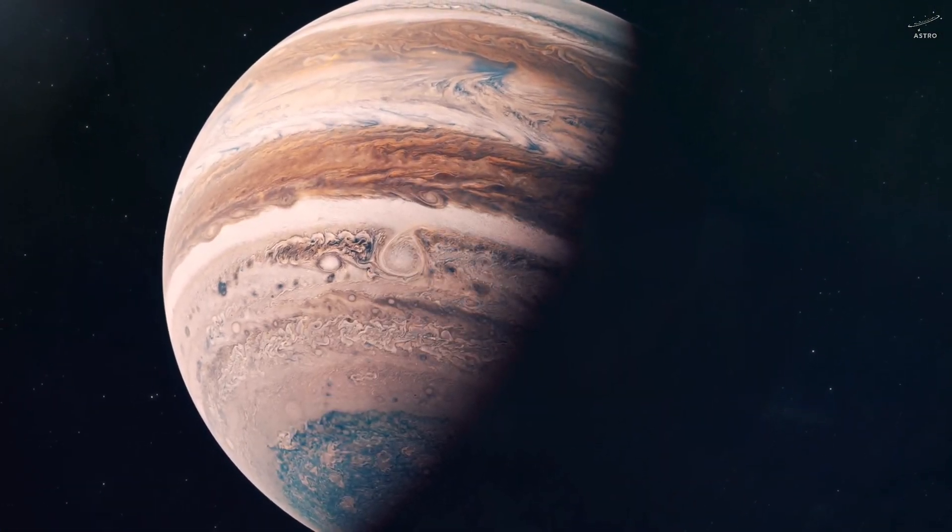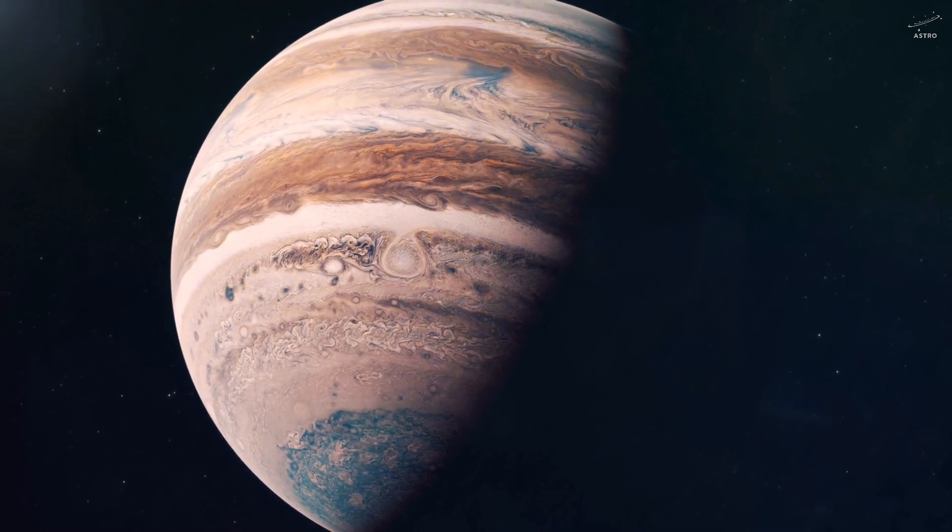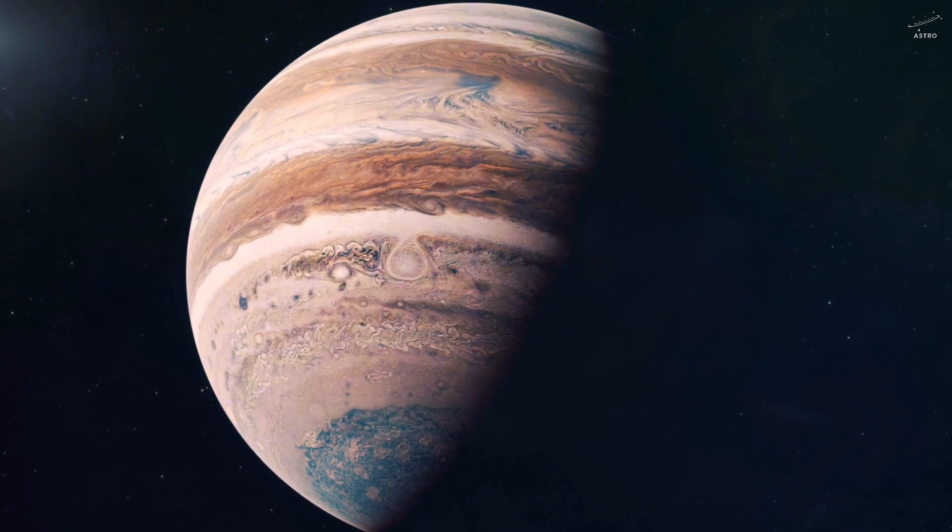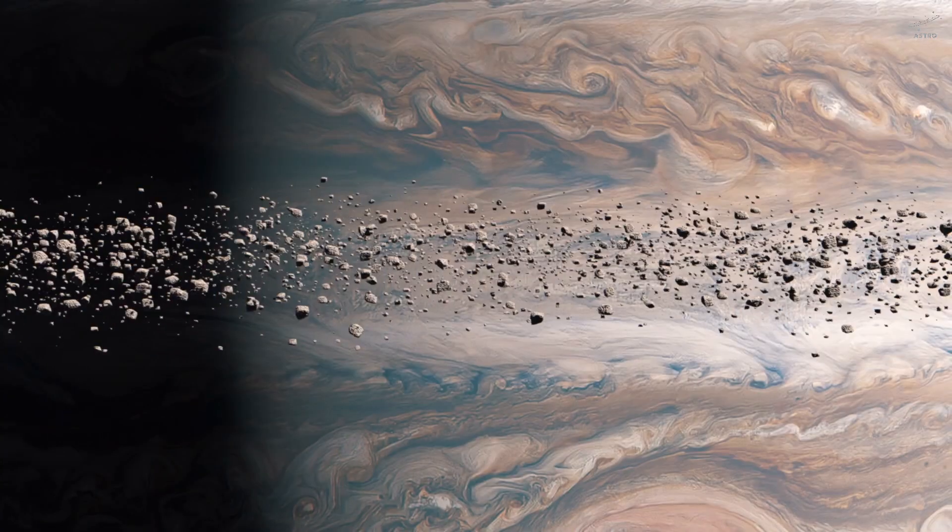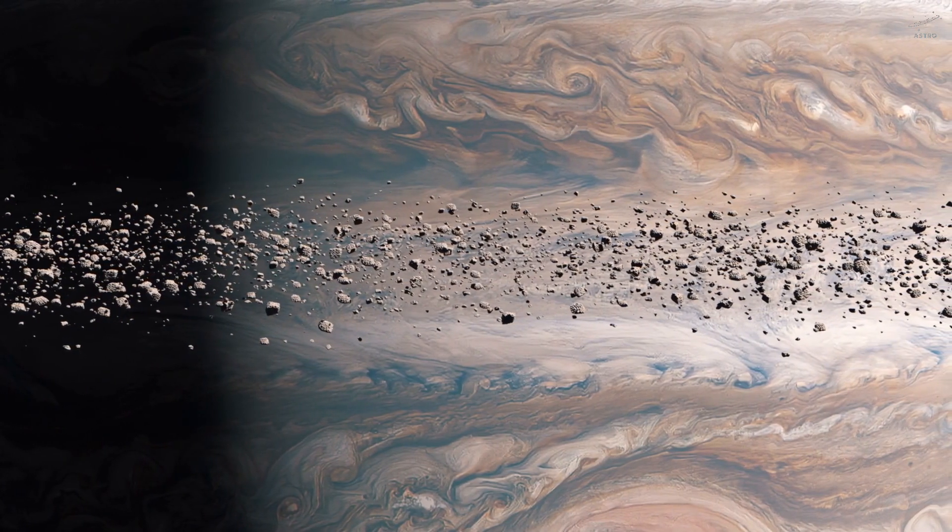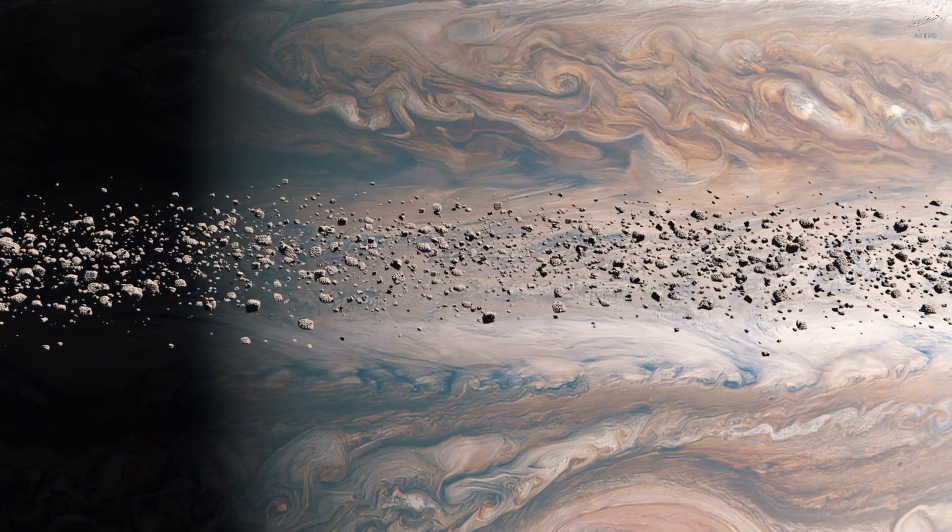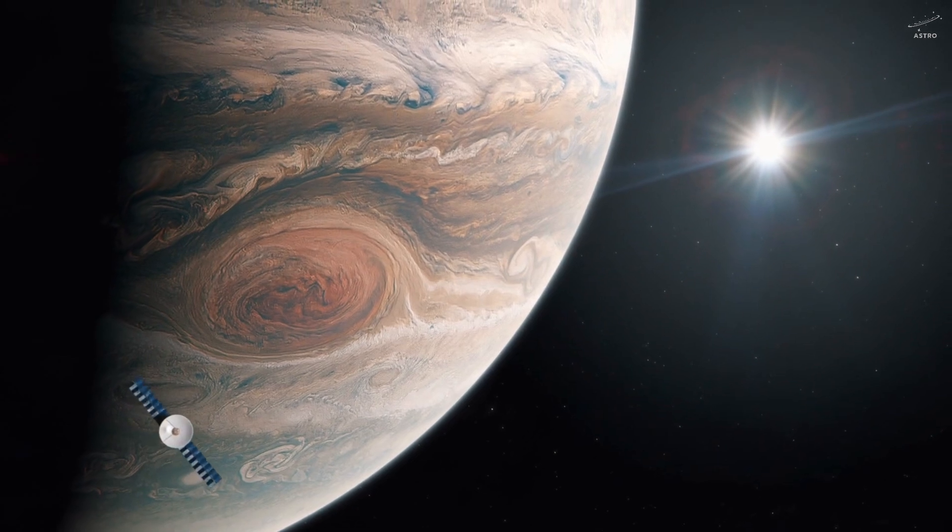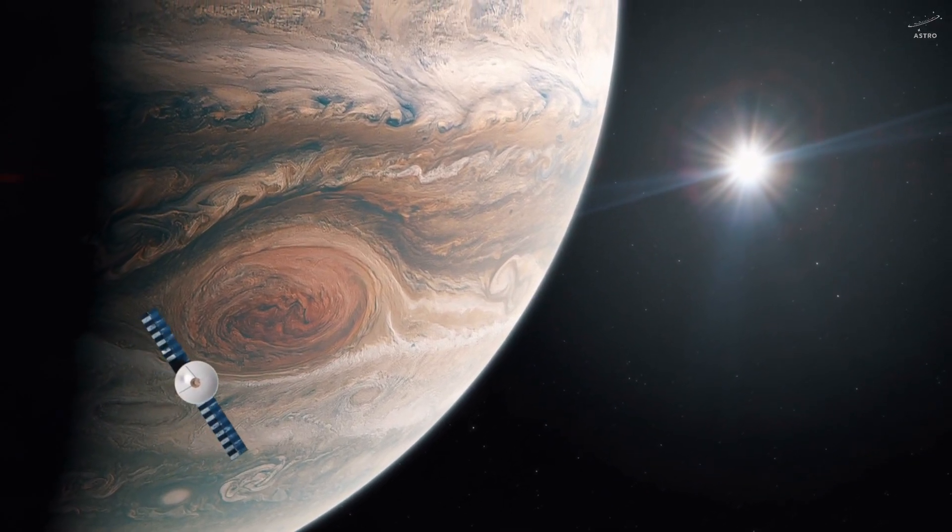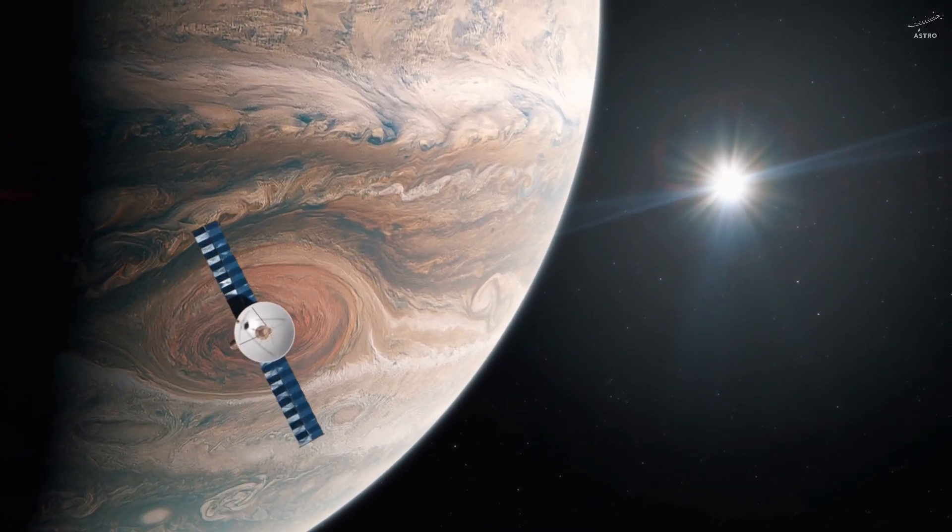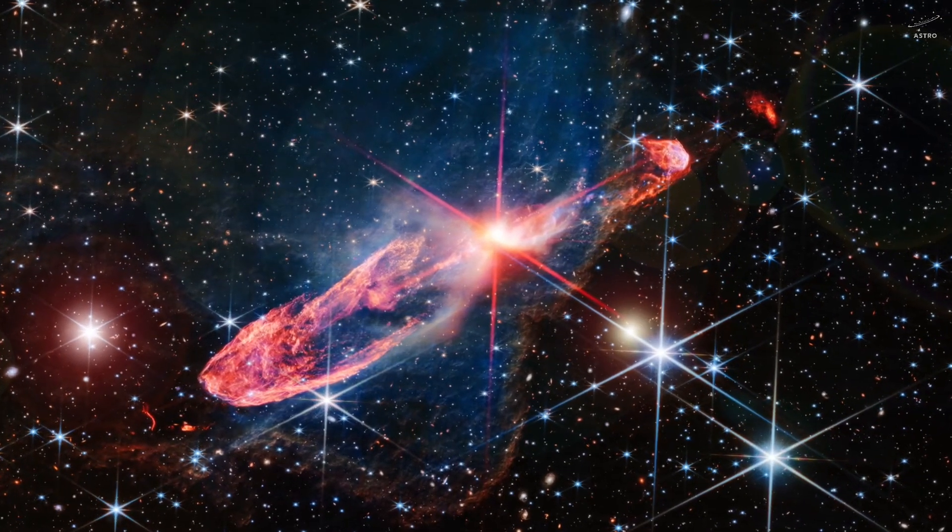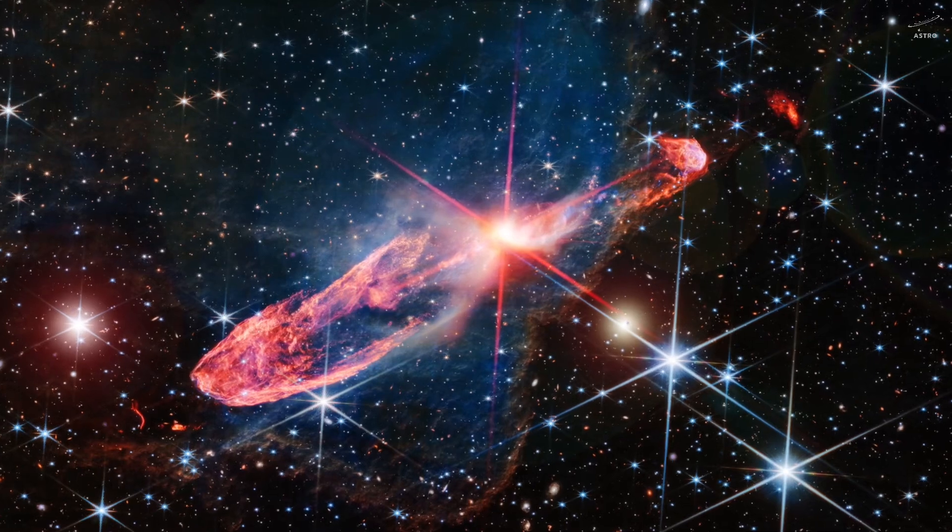But then we look outward. We look toward mighty Jupiter. This giant, hundreds of times more massive than Earth, silently guards us. It pulls in comets and asteroids that might otherwise strike our planet. But here's something fascinating. If Jupiter had just 80 times more mass, it could have ignited into a small star. So why didn't it? Why did the universe stop just short of turning Jupiter into a second sun?